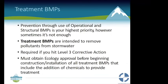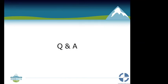The third category of BMPs is treatment. You do operational and structural BMPs first, but sometimes they're not enough — that's when treatment BMPs come in. They are intended to remove pollutants from the stormwater. Treatment BMPs are required if you hit a level three corrective action, and you must obtain ecology approval before beginning construction or installation of any treatment BMP.